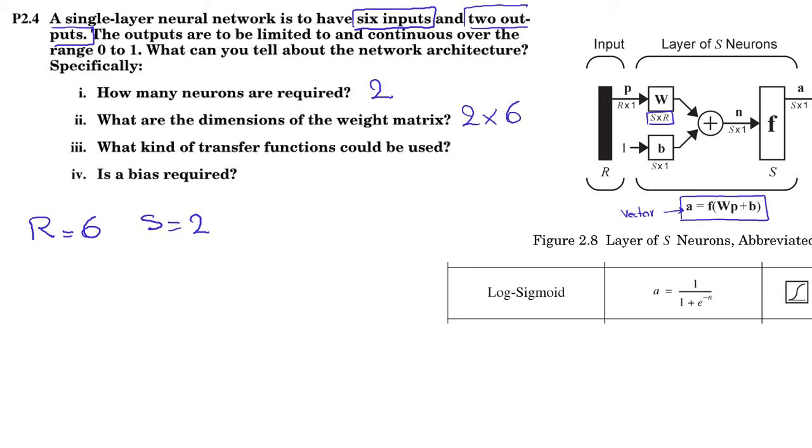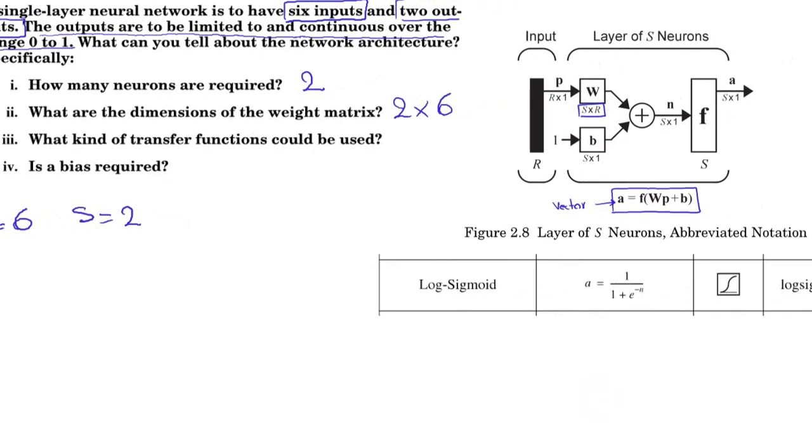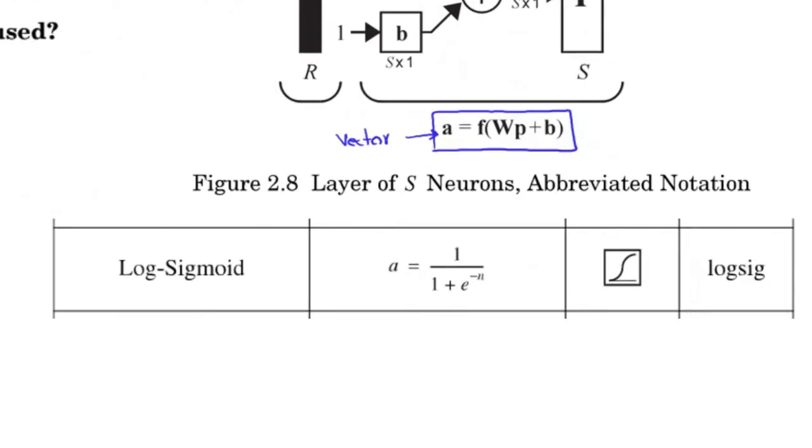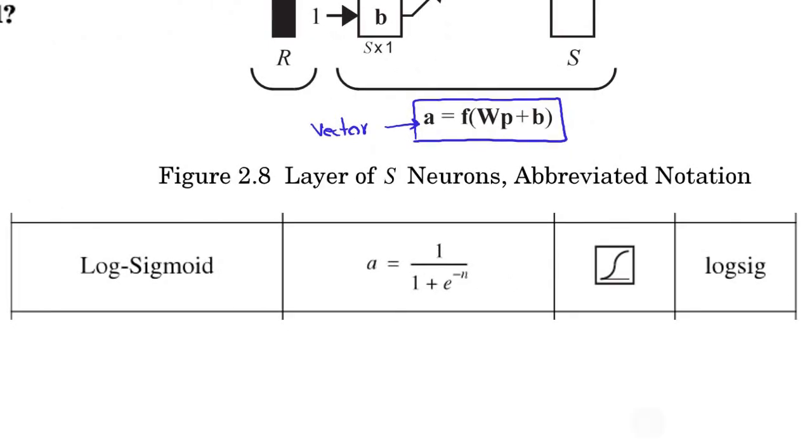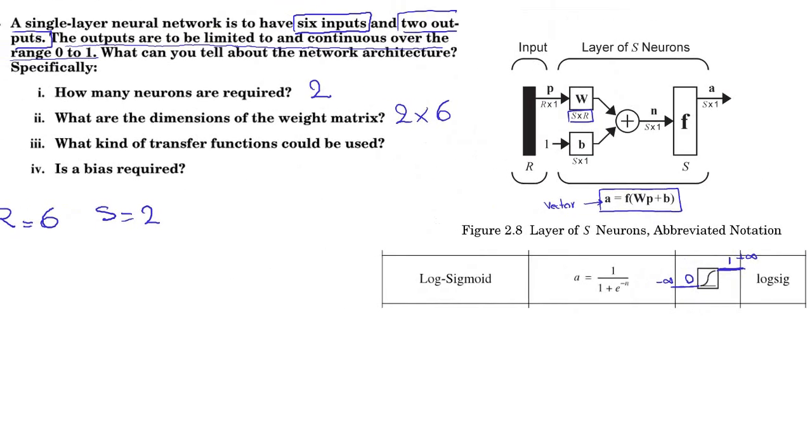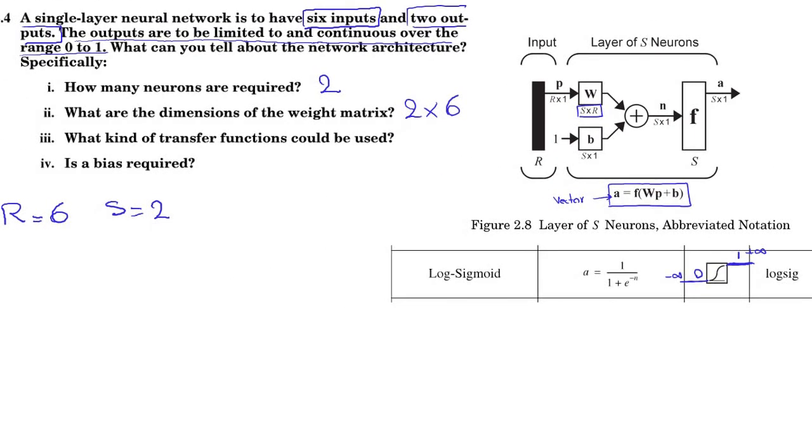And the third question is, what kind of transfer function could be used? So, let's look at the question. The outputs are to be limited to and continuous over the range 0 to 1. So, one possible transfer function is log sigma. When it goes to positive infinity, it is 1. And when it goes to negative infinity, its value is 0.